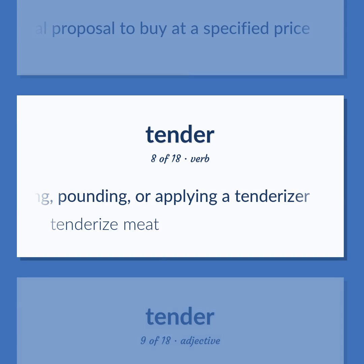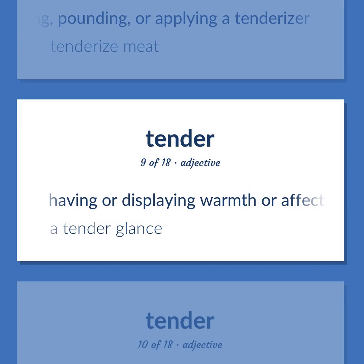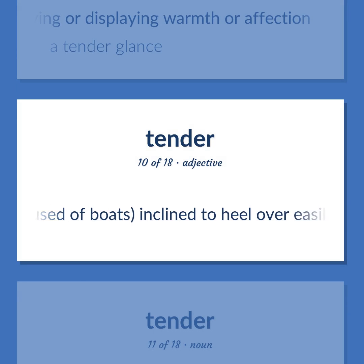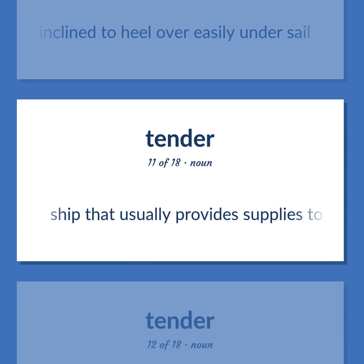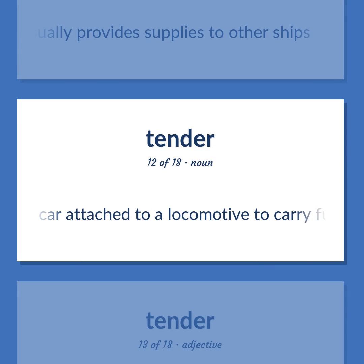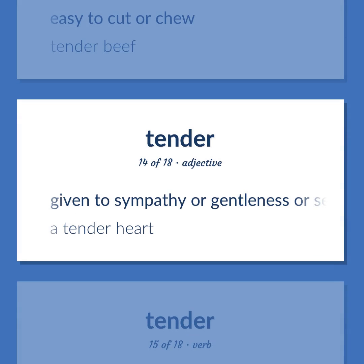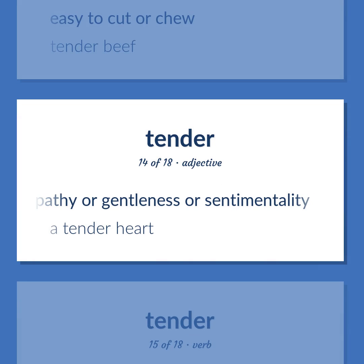Tender: Tenderize meat. Having or displaying warmth or affection — a tender glance. Used of boats: inclined to heel over easily under sail. A ship that usually provides supplies to other ships. A car attached to a locomotive to carry fuel and water. Easy to cut or chew — tender beef. Given to sympathy or gentleness or sentimentality — a tender heart.